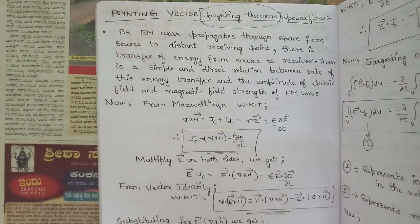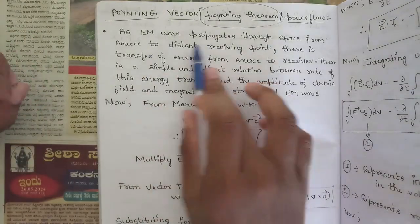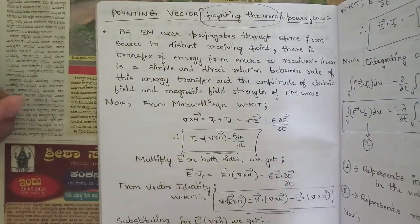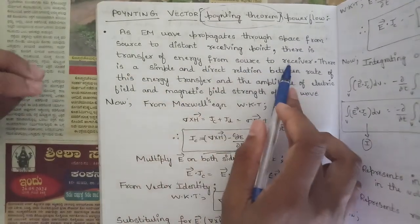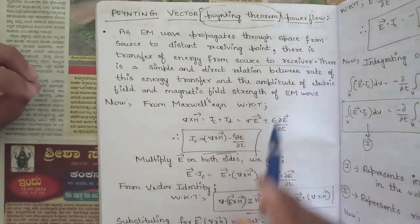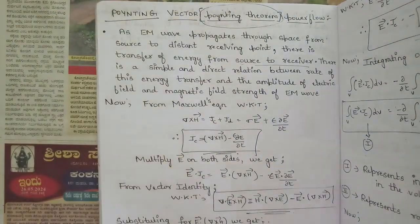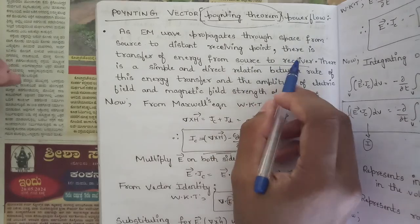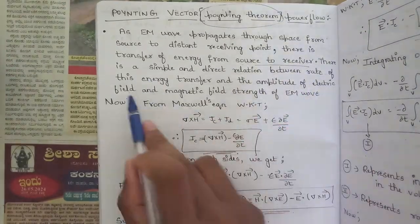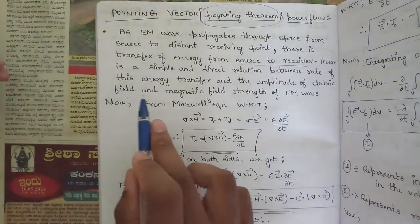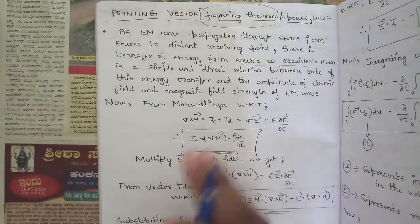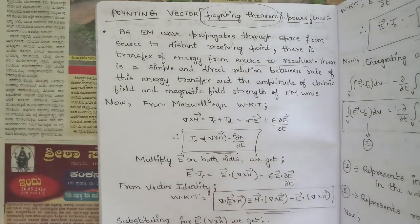So what is Poynting theorem? As an electromagnetic wave propagates through space from a source to a distant receiving point, there is a transfer of energy from source to receiver. The energy is being transferred from the source through an electromagnetic medium to the receiver. There is a simple and direct relationship between the rate of this energy transfer and the amplitude of the electric field and magnetic field strength of the electromagnetic wave.